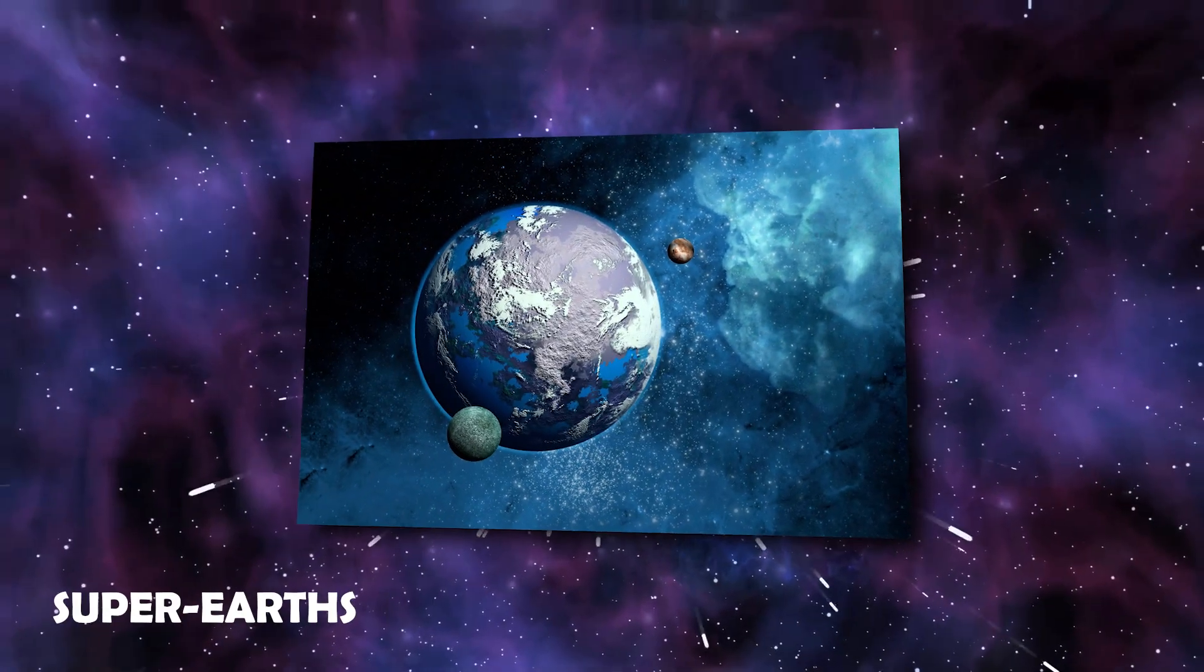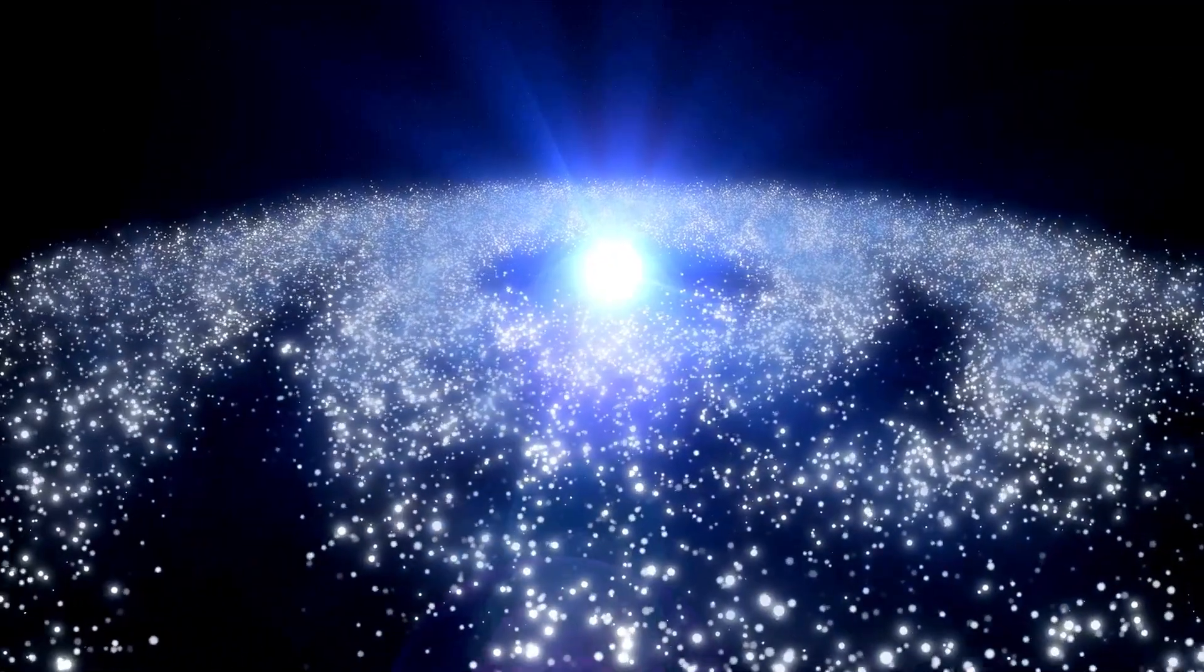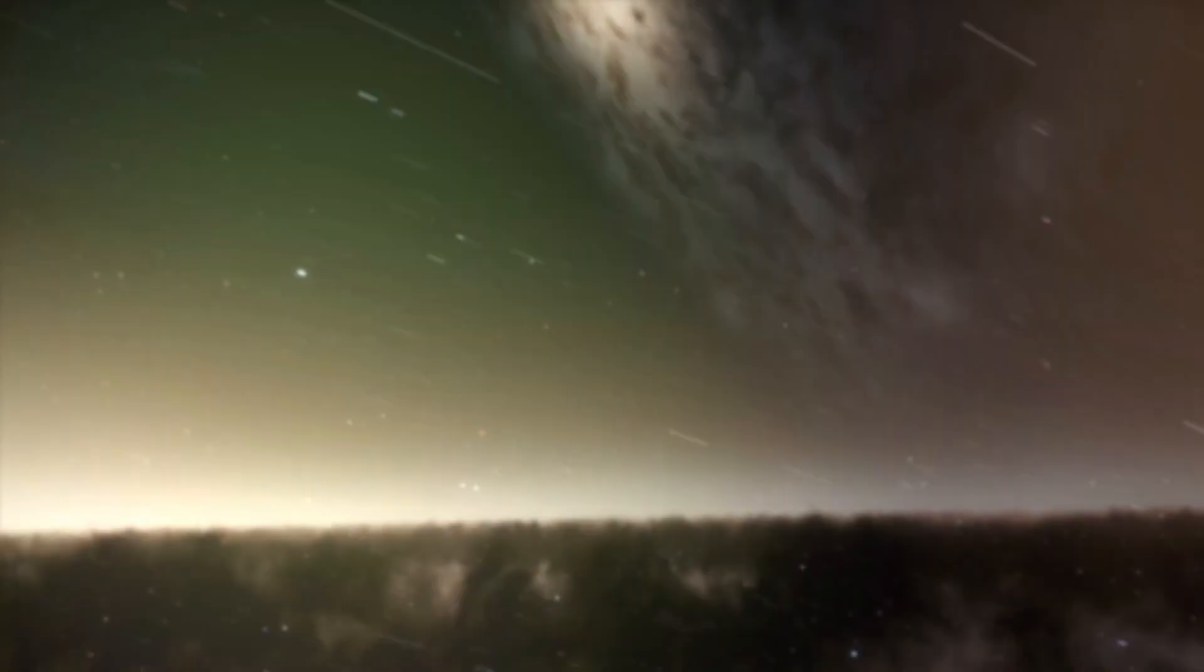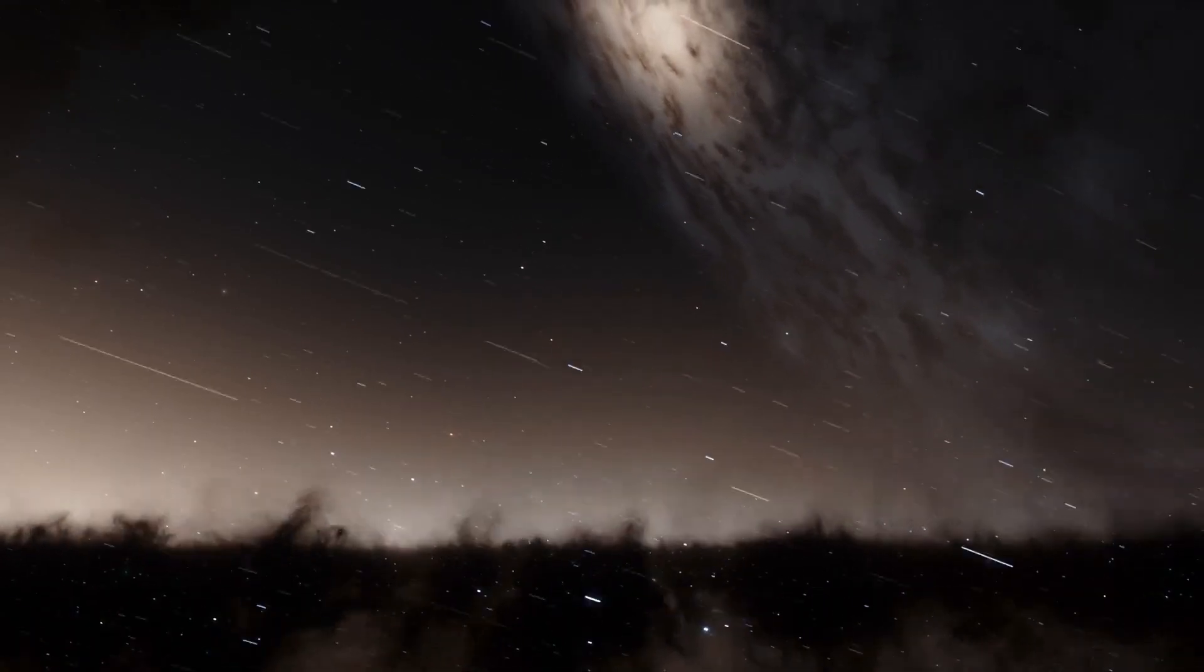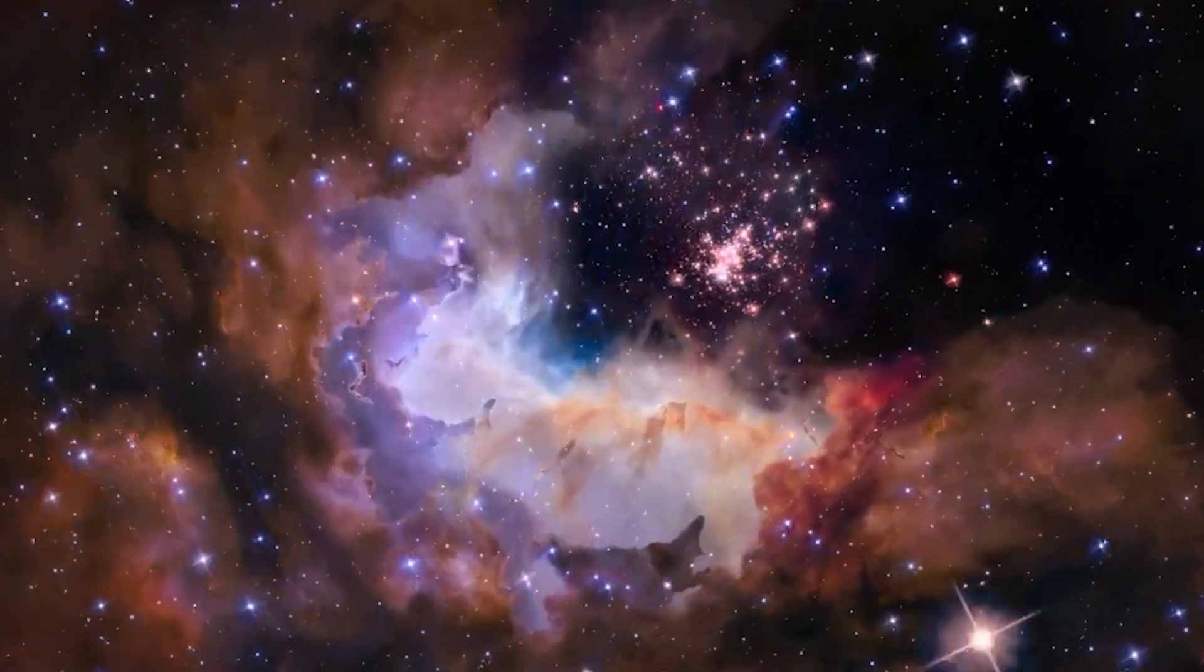These environments range from super-Earths, which are between the size of Earth and Uranus, to hot Jupiters, which orbit close to their respective suns. This plethora of potential pathways for planet formation reveals to us that every solar system may have its own one-of-a-kind ecosystem.